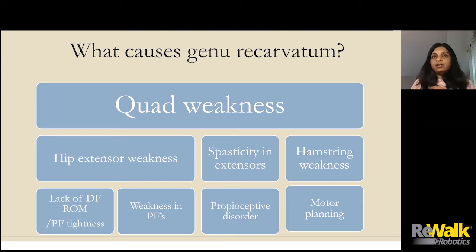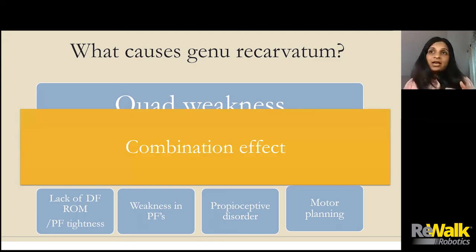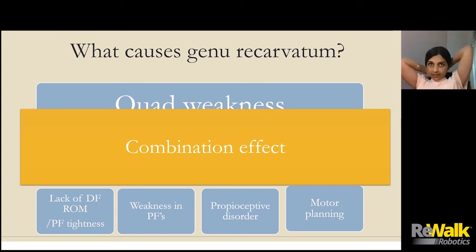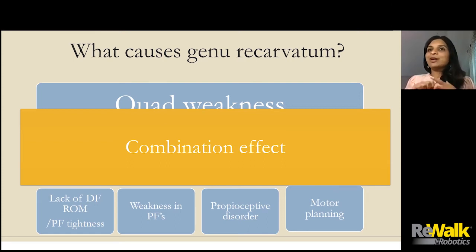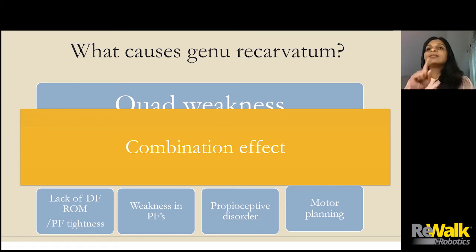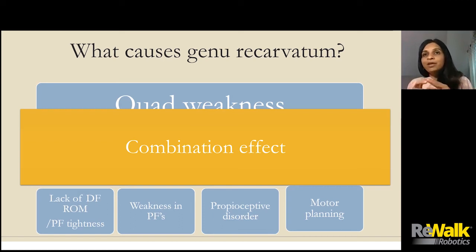A big cause of knee hyperextension is not one thing — it's a combination effect. Because on the other hand, if a patient only has one problem, like quadricep weakness, but has very strong gastroc muscle, good range of motion in the ankle, fine proprioception, and fine motor planning, they will be able to compensate and will not exhibit knee hyperextension. Same way, if they have weak gastroc but very strong quadriceps, they may compensate. But if they have weak gastroc and a weak quad — there we go, now we're going to see knee hyperextension.